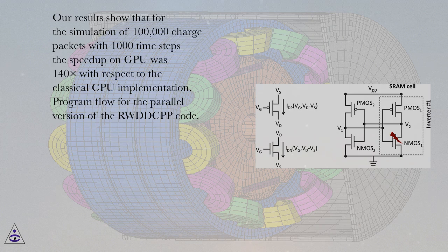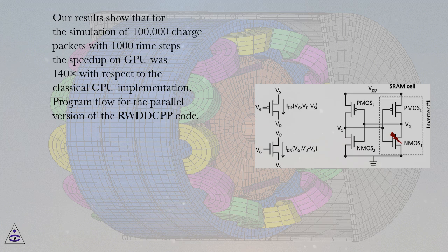Our results show that for the simulation of 100,000 charge packets with 1,000 time steps the speed up on GPU was 140 times with respect to the classical CPU implementation.